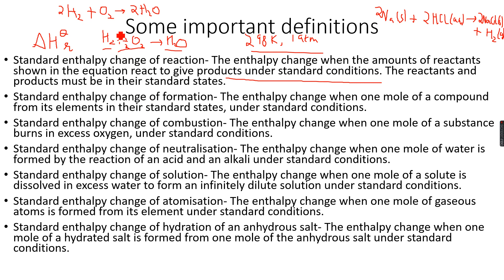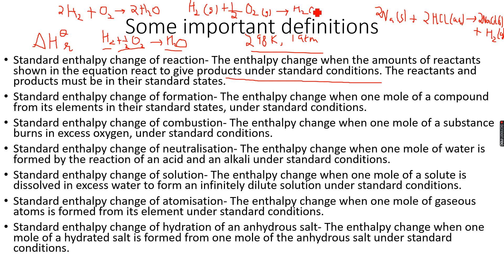There is one problem: we have to include the state symbols, so it will be H2(g) plus half O2, and remember they have to be in their standard states. Always put the state symbols. The enthalpy change accompanying this reaction is called the standard enthalpy change of formation.